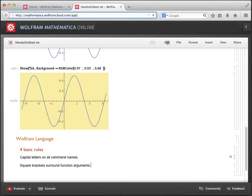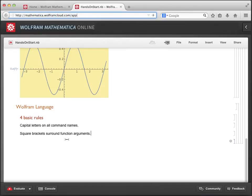Okay, so let's make another text cell to enter rule number three, which is curly braces are used for lists and ranges. And finally, we make one more text cell to enter rule number four, which is shift plus enter to evaluate input.